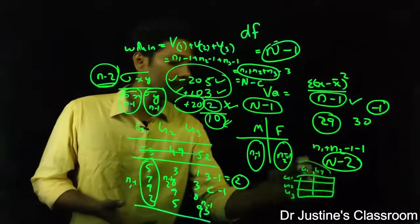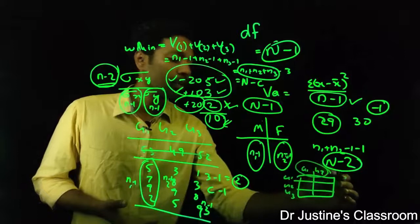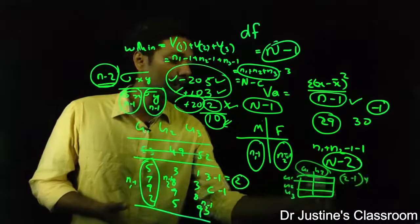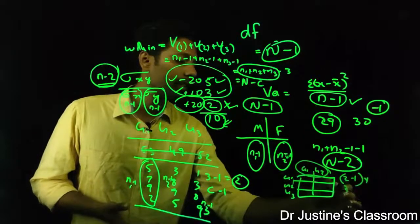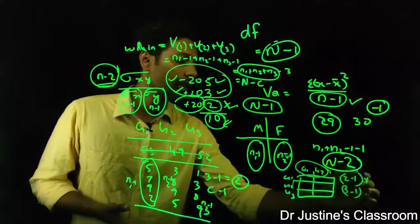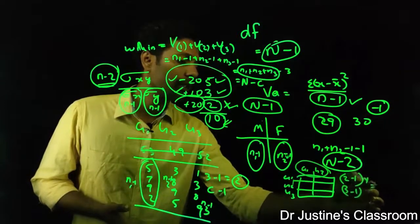How do you calculate degree of freedom here? The first set here, group 1, group 2, two minus one, number of columns minus one, into number of groups minus one, that is three minus one, number of rows minus one. So it will be 1 into 2, that is 2 like this.